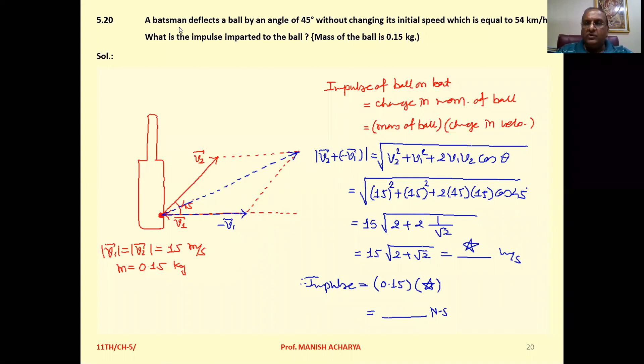5.20 A batsman deflects a ball by an angle of 45 degrees without changing its initial speed which is equal to 54 km per hour. What is the impulse imparted to the ball? Mass of ball is given to you.